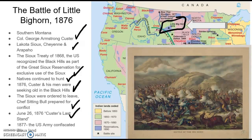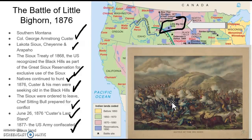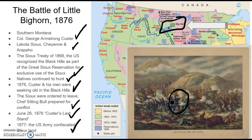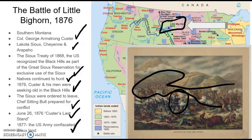Whites were appalled by the defeat of the U.S. Army at the hands of Native Americans, but they were not appalled when people like Chivington killed Native Americans at Sand Creek. Whites demanded retaliation. And in 1877, a year later, the U.S. Army went back to Little Bighorn and confiscated all the land they had promised to protect only ten years earlier.